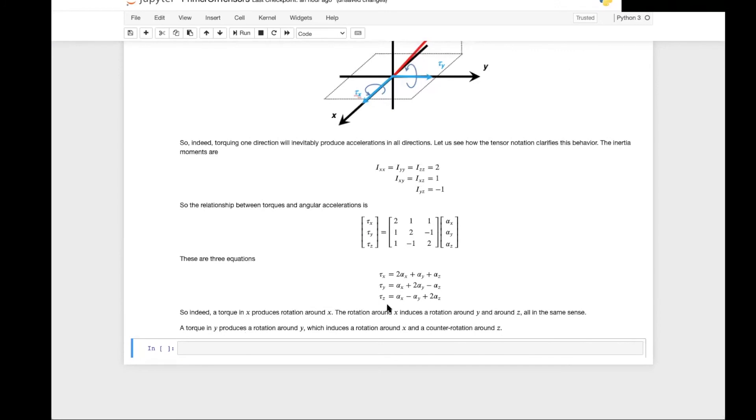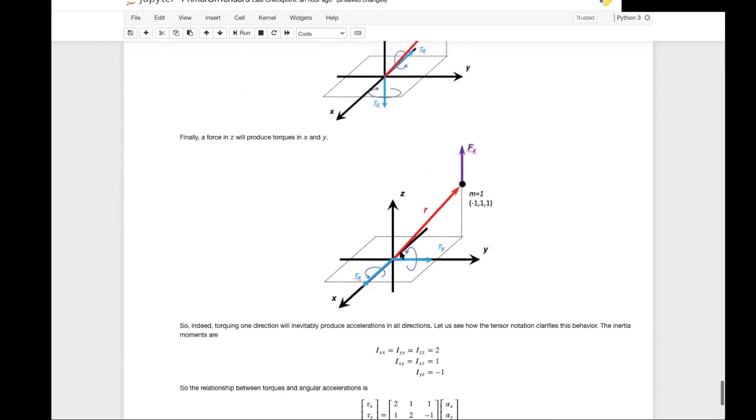In this case y indeed produces a rotation around y, but also rotations around x and around z. Notice that in this case if you have a rotation around y, you have a rotation around x and a counter rotation around z, which is what we see here in this graphical representation. A rotation in y leads to a rotation of the same sign around z.